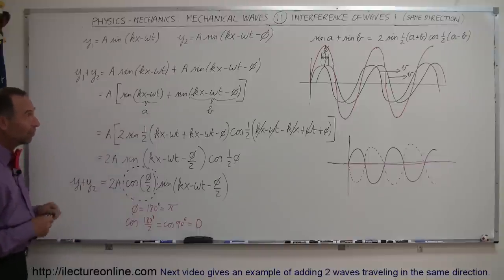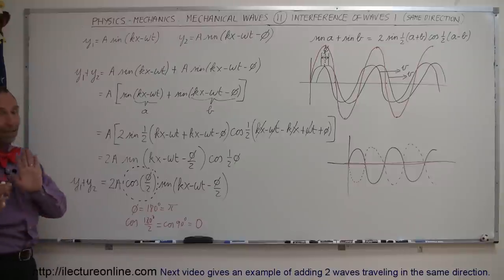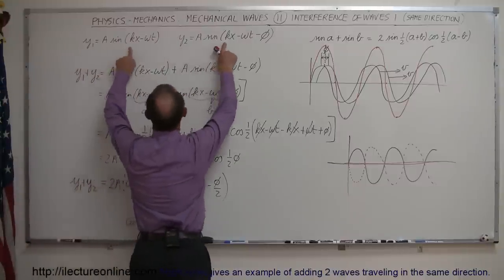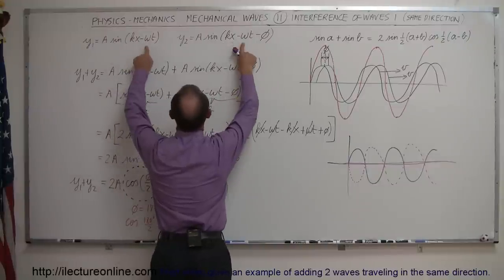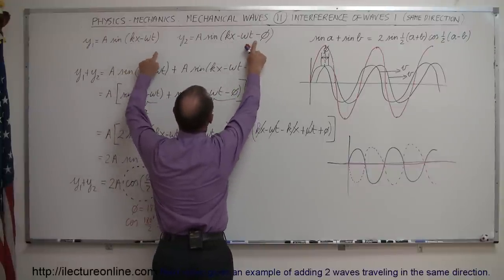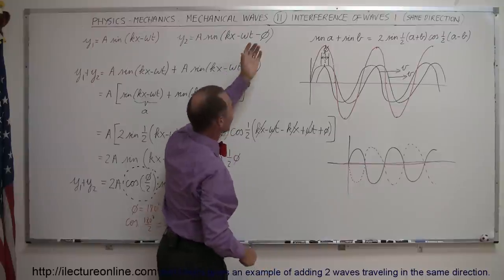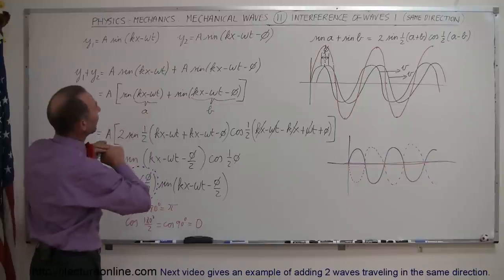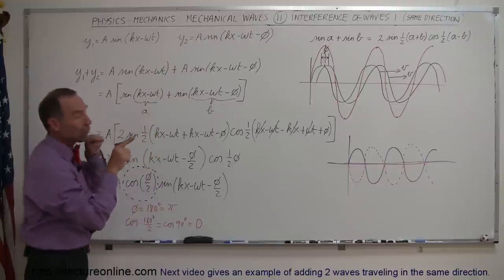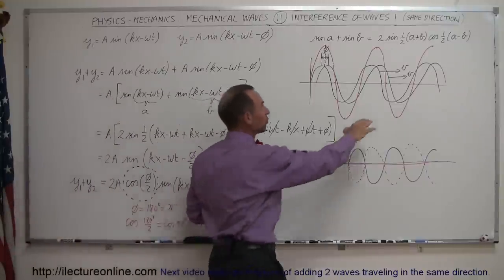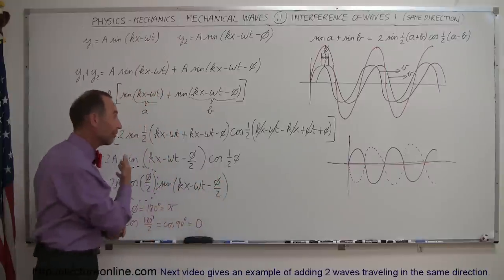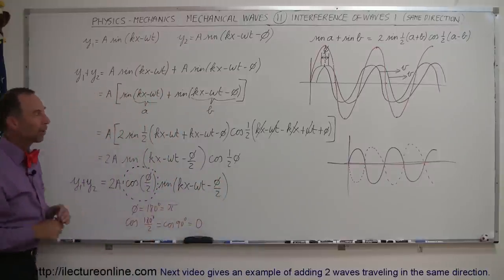That's how you look at wave interference, and hopefully this gives you a good insight into what it means. Remember, the case we had here is two waves with the same amplitude, the same wavelength, the same frequency, the same velocity, shifted by a certain phase. They're also both traveling in the same direction — to the right. When we do the case where they're traveling in opposite directions, you'll get a very different result, and we'll see that in one of the next videos.